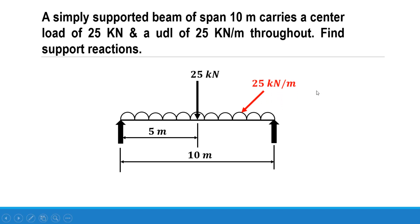The arrangement of the beam is as shown here. The central point load is of 25 kilonewton magnitude and the uniformly distributed load is of 25 kilonewton per meter.